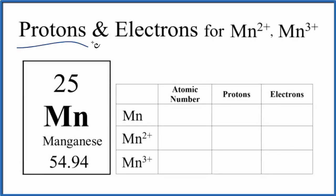In this video, we'll find the number of protons and electrons for Mn2+, Mn3+, and then for neutral Mn. So this is the manganese 2 ion, manganese 3 ion, and this is neutral manganese.